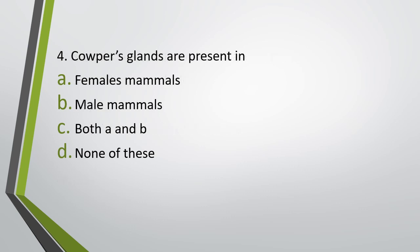Question number four. Cowper's glands are present in: female mammals, male mammals, both male and female, or none of these. Correct answer is option B — Cowper's glands are found in male mammals.